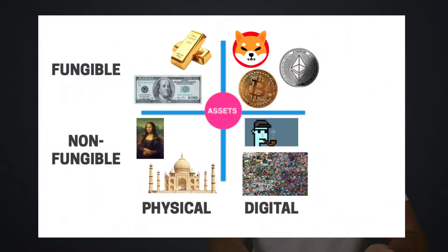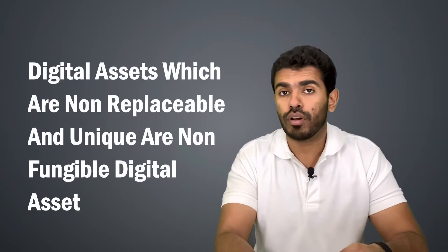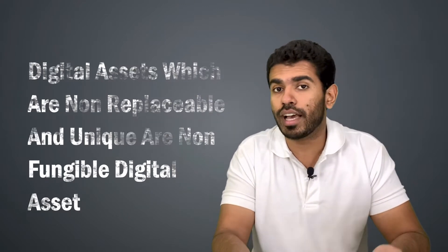And on the right hand side, in the fourth quadrant, we have the non-replaceable digital assets. So any asset which can be art or a music video which is not replaceable but in the digital format is what we call a non-fungible digital asset.